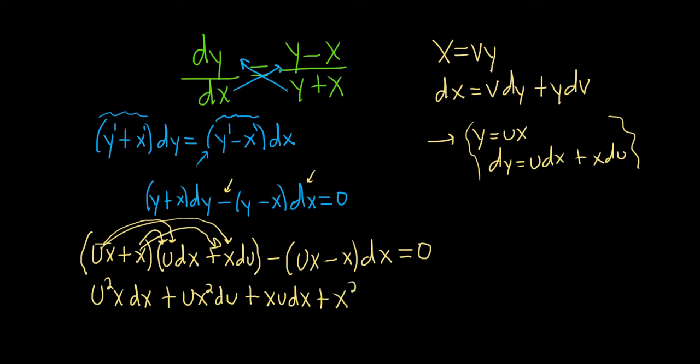Now here we have minus ux times dx, so minus uxdx. And then plus xdx. And this is equal to 0. The plus comes from the two minus signs.